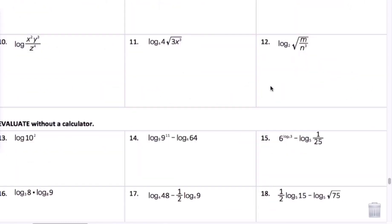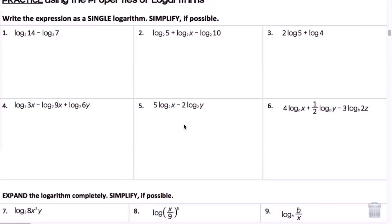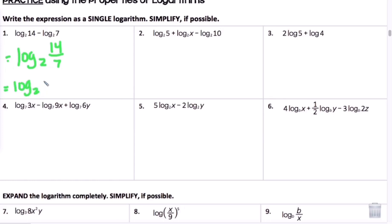Let's do some examples. Number 1: log base 2 of 14 minus log base 2 of 7. We need to write it as a single logarithm. Since I see subtraction, I use the quotient rule and write it as log base 2 of (14 over 7), which simplifies to log base 2 of 2. Then using the foundation property — 2 to what power gives me 2? That's 1 — so the answer is 1.